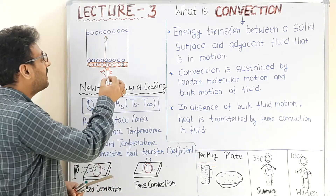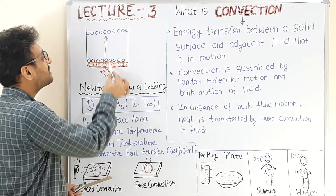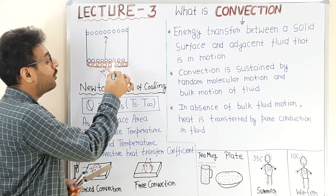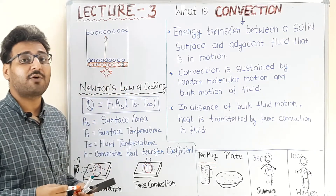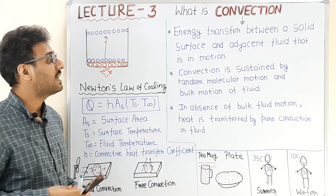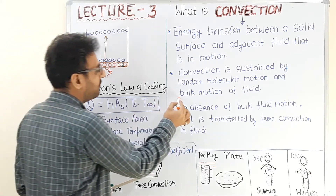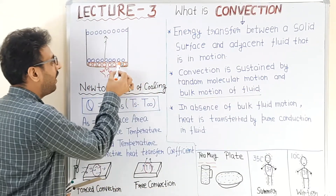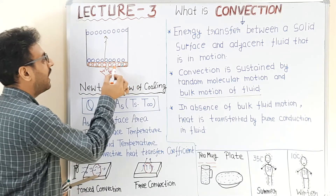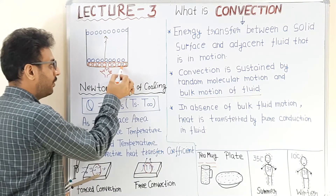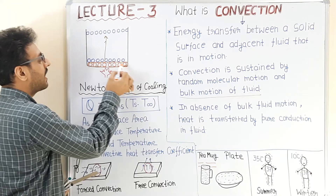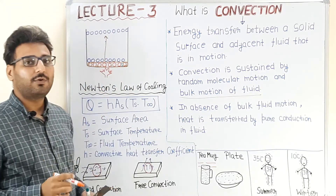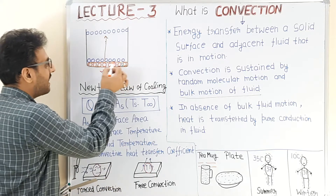The movement of a complete layer and a large number of particles is known as bulk motion of the fluid. The motion of the complete layer or a number of fluid particles or molecules collectively in a group is known as bulk fluid motion.